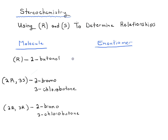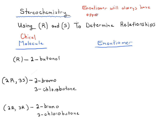The key thing here is that we're dealing with a chiral molecule in each case. A chiral molecule will not have any plane of symmetry. Our chiral molecules here have stereocenters, and the take-home lesson is that the enantiomer will always have the same name but opposite R/S designations.